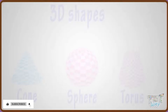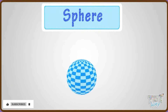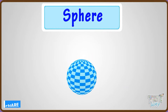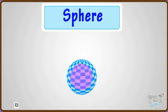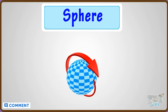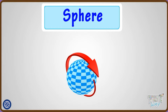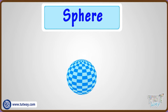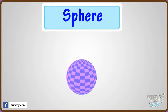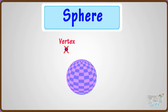Let us start with a sphere. A sphere is a perfectly round and circular 3D shape that resembles the shape of a completely round ball. It has only one face, which is spherical, and it has no vertex and edge.